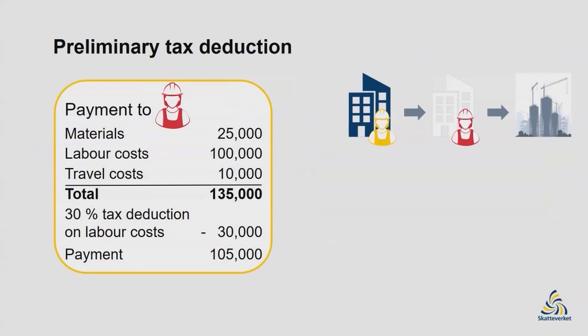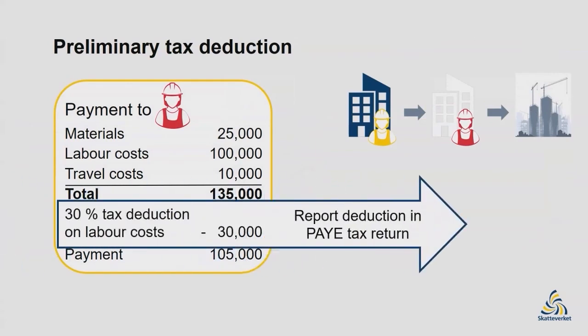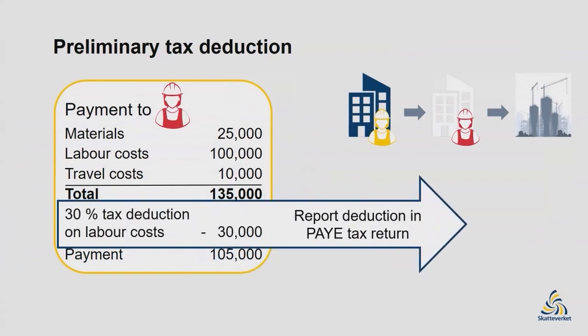This means that the Polish company will not be paid the total invoiced amount. After the preliminary tax deduction, the Swedish company has to account for the preliminary tax deduction in the PAYE tax return the month after the payment has taken place. PAYE stands for Pay As You Earn. The deducted preliminary tax will be credited to the Polish company in the Swedish income tax system. If the Polish company is not liable for tax in Sweden, it can apply for an early refund of this preliminary tax.